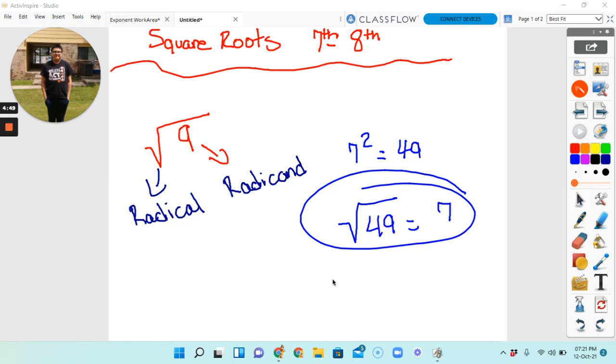For those who don't know, a square root is this image you're seeing right here. The little arrow sign is the radical, and the number inside the square root or the radical is the radicand.